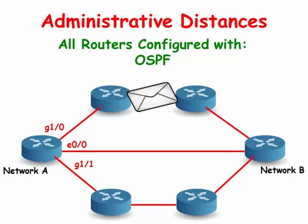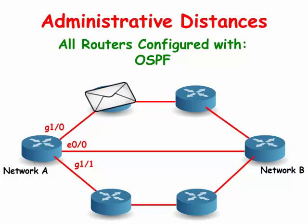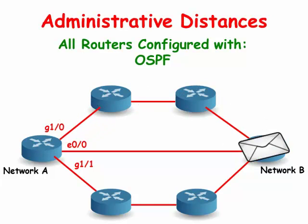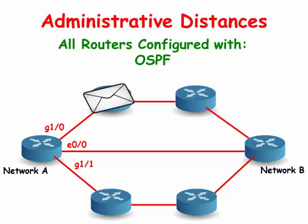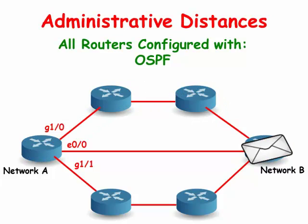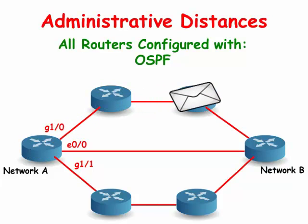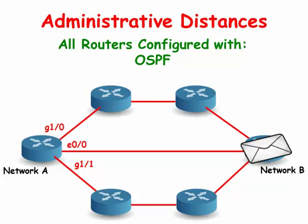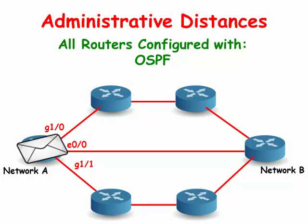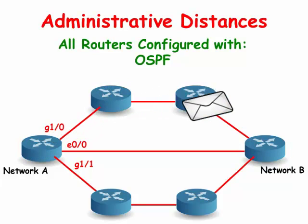Now we have OSPF configured on all the routers. OSPF uses the value of cost when deciding which interface to send packets out of. In this example, gigabit Ethernet 1/0 offers the best cost for sending packets from network A to network B.